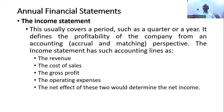Revenue talks about the amount of money the company has earned by carrying out its activities. Cost of sales refers to the direct costs incurred to generate revenue. Operating expenses are the expenses the company spends on various items in order to generate that revenue.